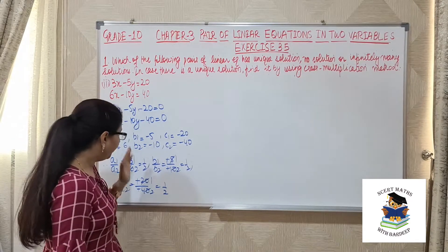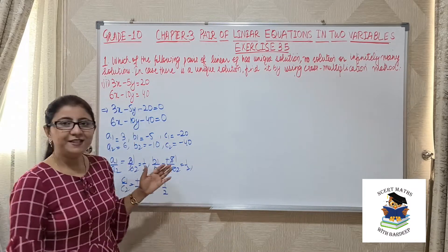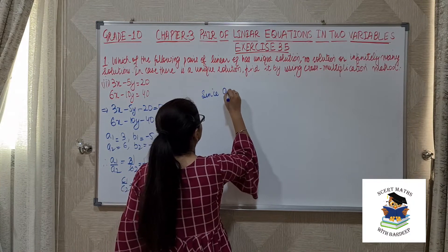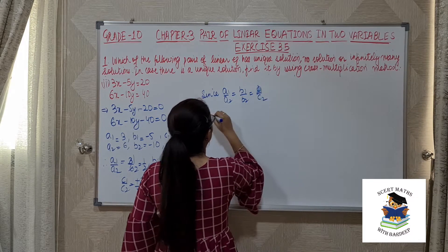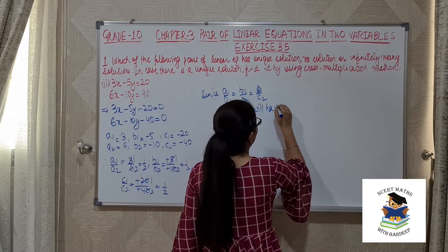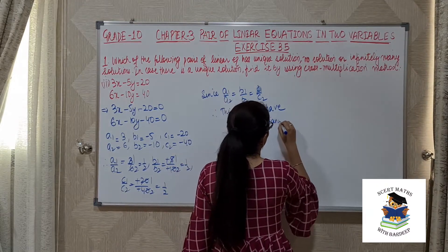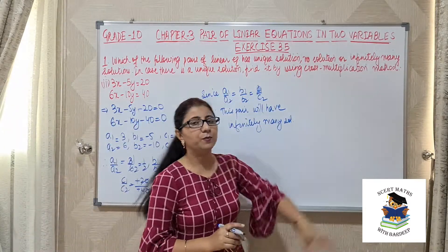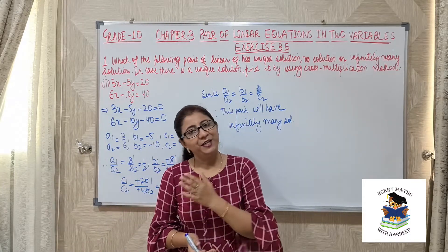Since a1/a2 equals b1/b2 equals c1/c2, this means the pair will have infinitely many solutions. Since they told us to use cross multiplication only for a unique solution, and since this pair has infinitely many solutions, we are done with this part. Now let's see the next one.